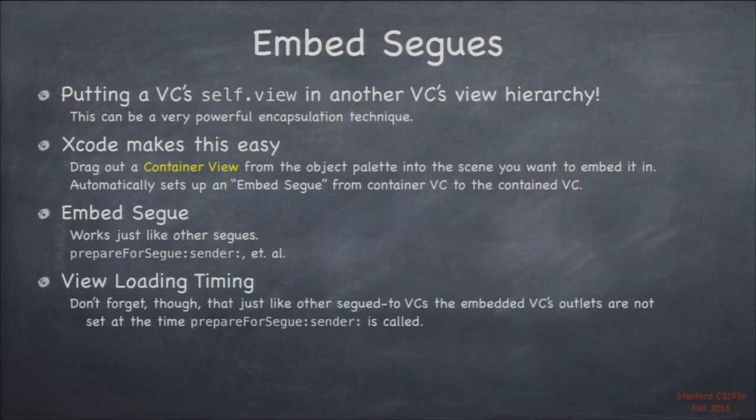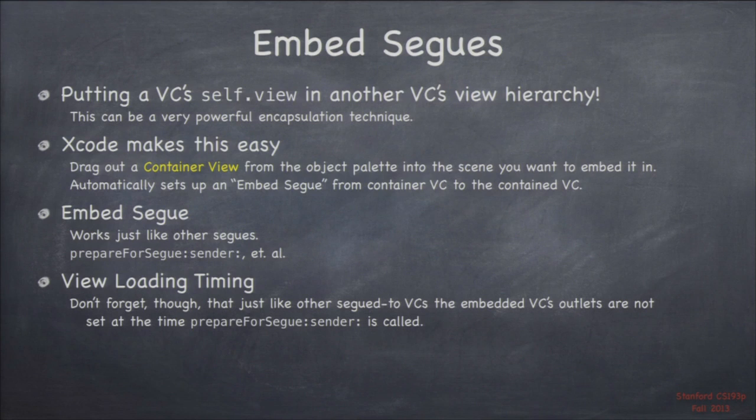One thing to be careful of is the timing of setting things. When does the embed segue's prepareForSegue happen relative to other things in the containing view controller, like outlet setting? The answer is it happens pretty early — before outlet setting, just like all prepareForSegues do. So a lot of times you're going to have to do whatever code you do in prepare also in your outlet setting if they depend on each other. Whichever one happens second will do the actual work. We've seen this in Photomania before — anything in prepareForSegue that depends on an outlet, you might also do in the outlet setter.